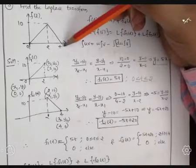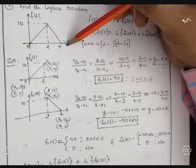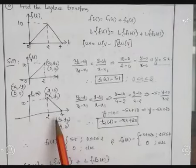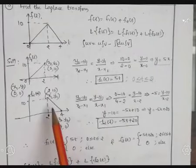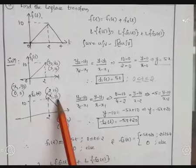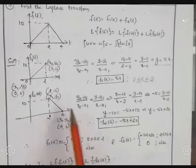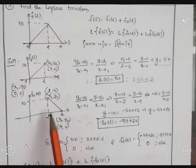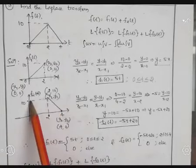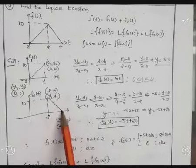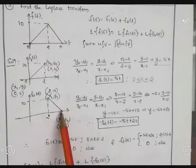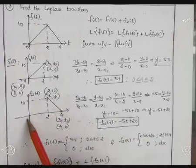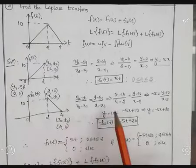Similarly, for the remaining part of the triangular function from t = 2 to 4, we identify the coordinates for the two endpoints: x1 = 2, y1 = 10, and x2 = 4, y2 = 0.